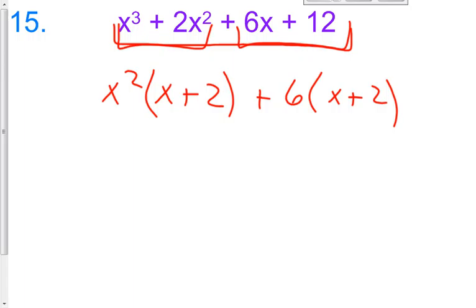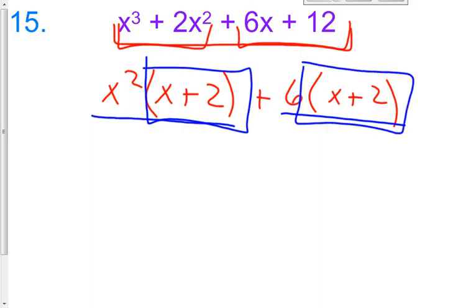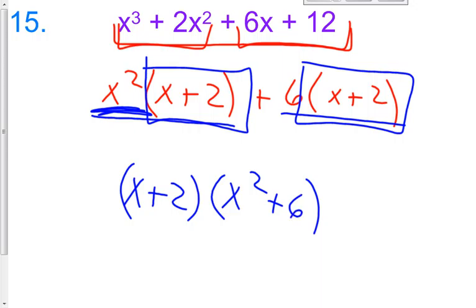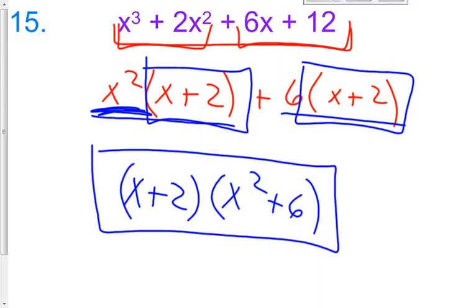All right. So, now here's one term, and here's the other term. So, as you can see, they both have an X plus 2 term in them. So, we're going to take out that X plus 2. And then our second term is going to be another binomial with whatever is left, which is the X squared and the positive 6. So, here is your answer for number 15.